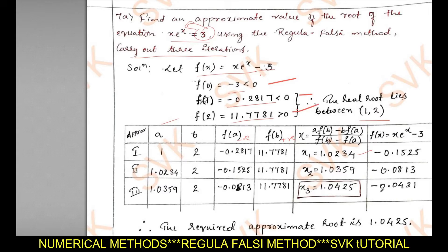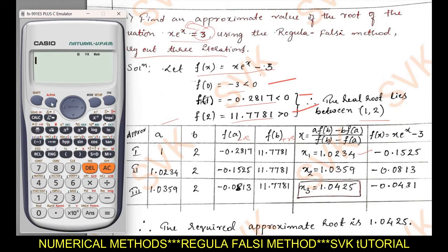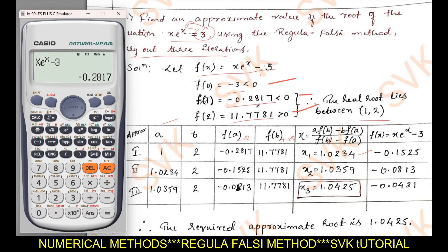To find these values, type: Alpha x · e^(Alpha x) — use the shift e^x key — then use the joystick to exit the power, minus 3. Press Calc, put x = 0, press equals to get −3. Similarly press Calc, give x = 1, press equals to get f(1) and note it. Then Calc, x = 2, equals — note that opposite-sign value.